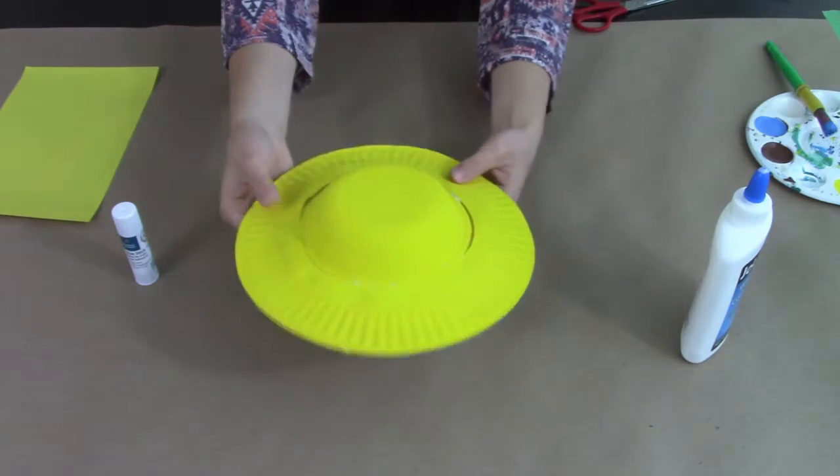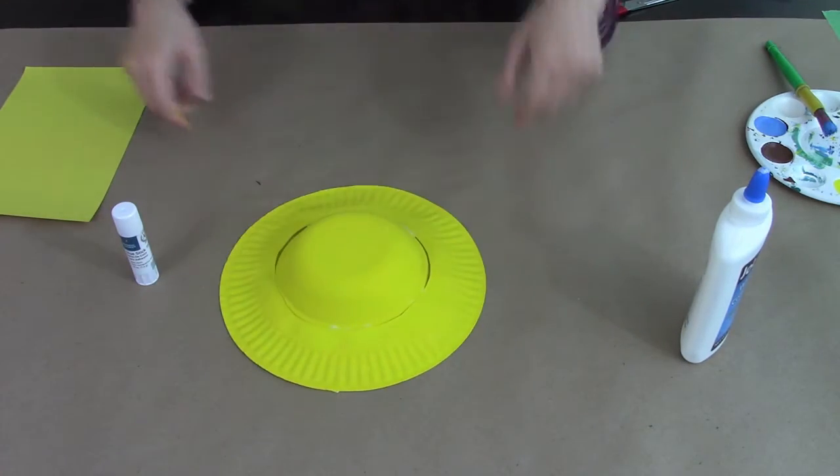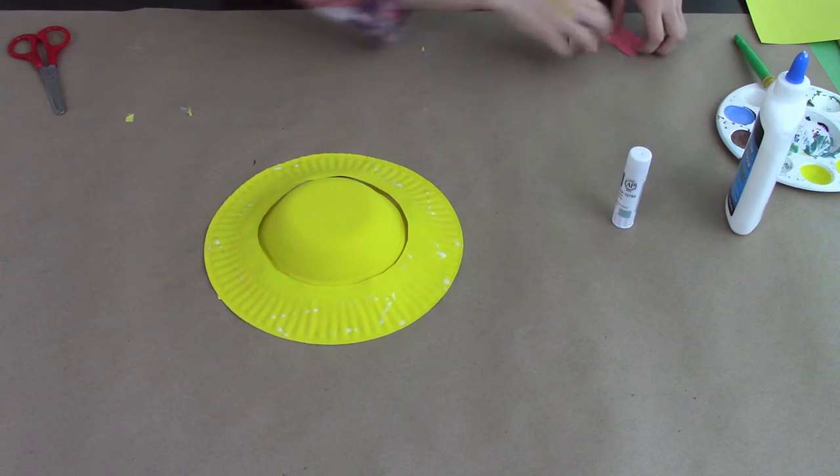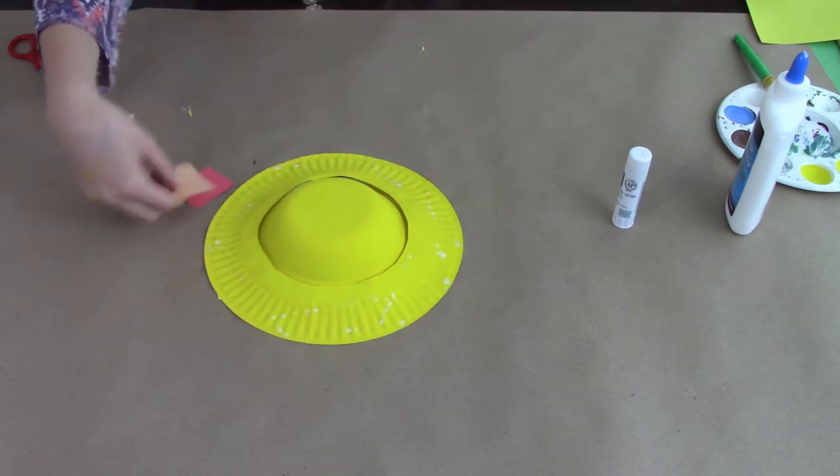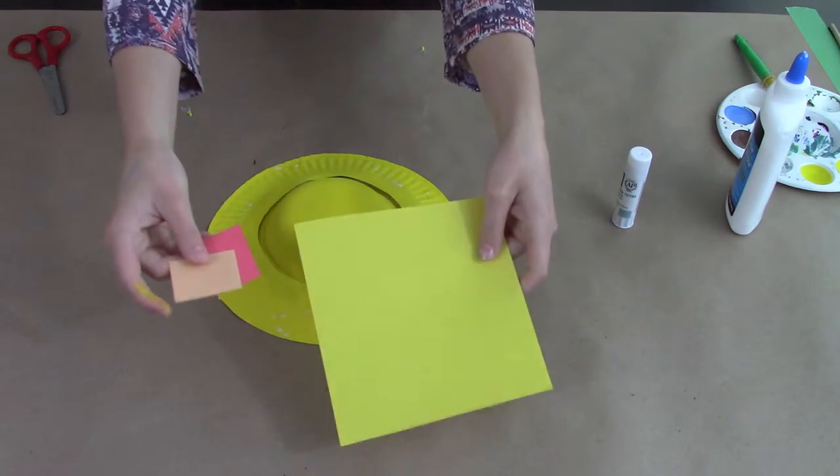After that we're just going to add some decorations onto our hat. So we've provided you with some extra pieces of paper. I'm going to take this little piece of orange and red and I'm going to make little patches out of it.